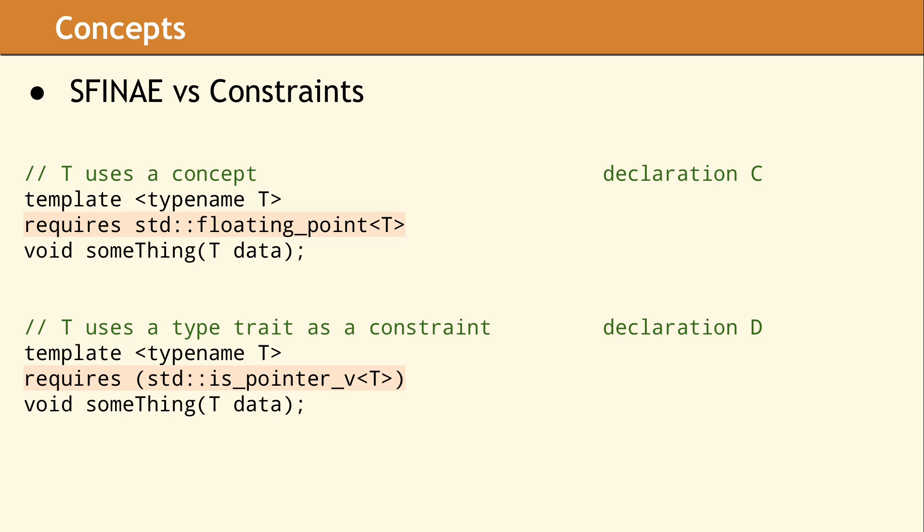The first example uses a concept, so you only specify the name, which happens to be std::floating_point. Currently, there are no concepts in the standard library to check if T is a pointer. We are not sure if this is an oversight and it is likely more concepts will be added sometime in the future.